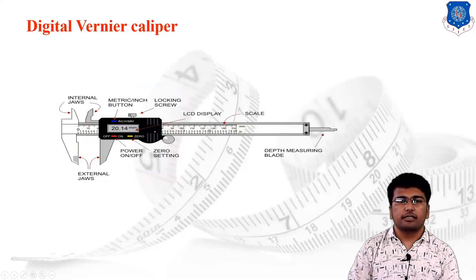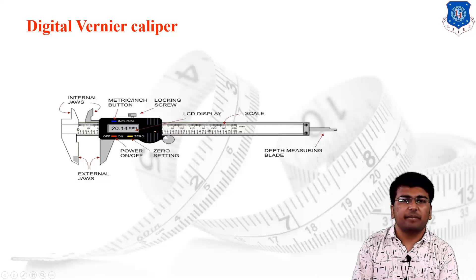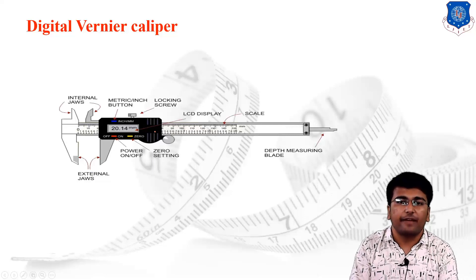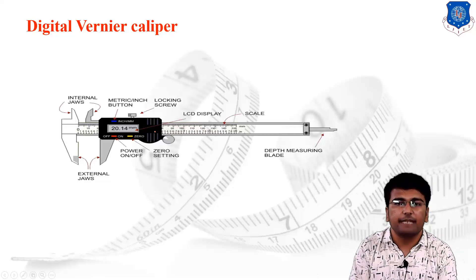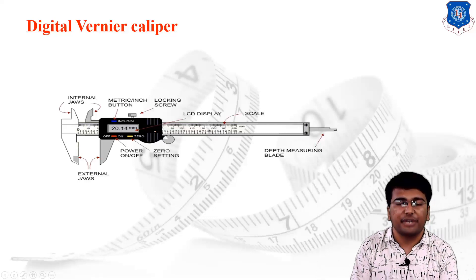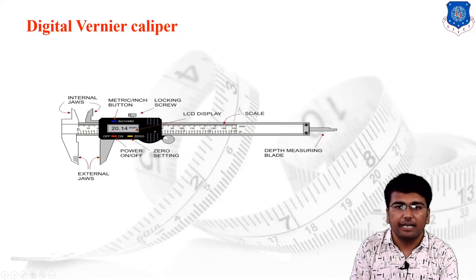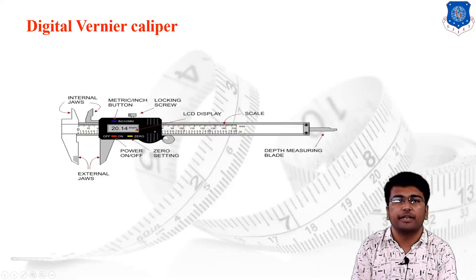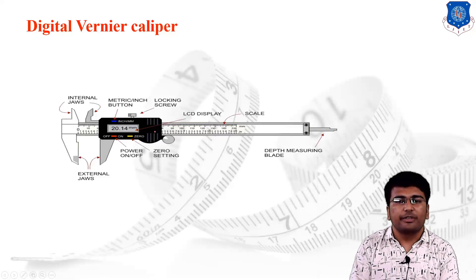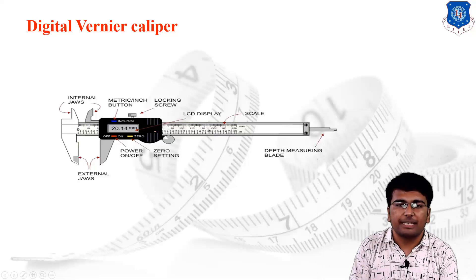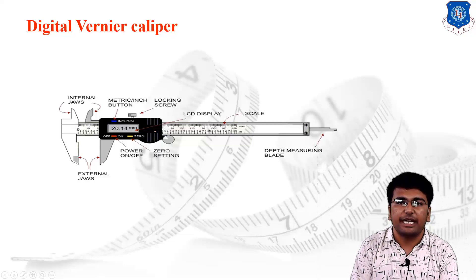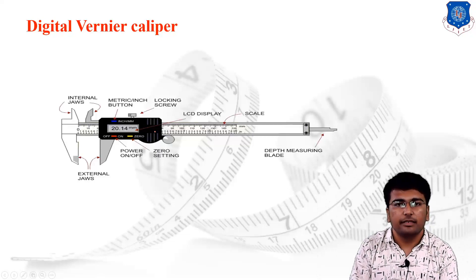Today we discussed the basic concept of measurement, the requirements of modern industries in terms of measurement and manufactured products, and then covered the vernier caliper, dial vernier caliper, and digital vernier caliper. In the next lecture we will discuss the remaining two concepts based on the vernier principle — the vernier height gauge and depth gauge — and then we will start with the micrometer. Thank you.